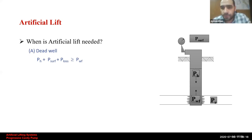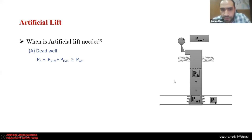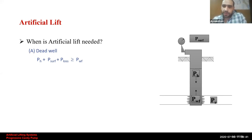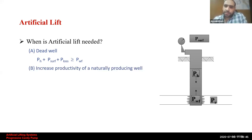If we put this in a formula: the hydrostatic pressure plus the surface pressure plus the anticipated losses will be more than the bottom hole flowing pressure. The second case where we need artificial lifting is if the well is already producing naturally but we need to increase the productivity of the well.